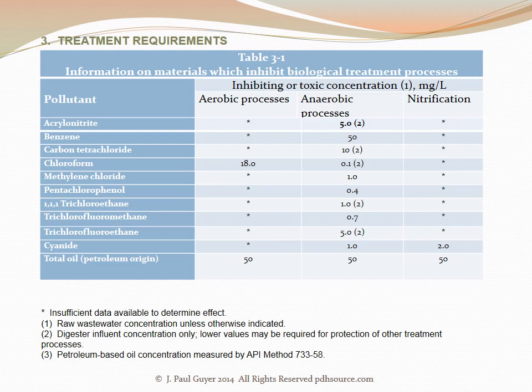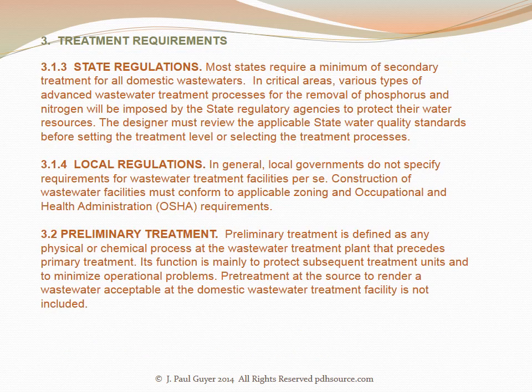This is a continuation of Table 3-1 for additional pollutants — acrylonitrile, methylene chloride, cyanide, and so on, including total oils. Most states require a minimum of secondary treatment for all domestic wastewaters. In critical areas, various types of advanced wastewater treatment processes for the removal of phosphorus and nitrogen may be imposed by the state regulatory agencies to protect their water resources.